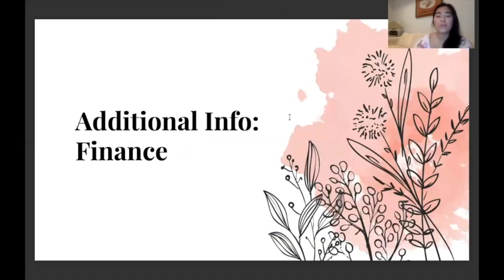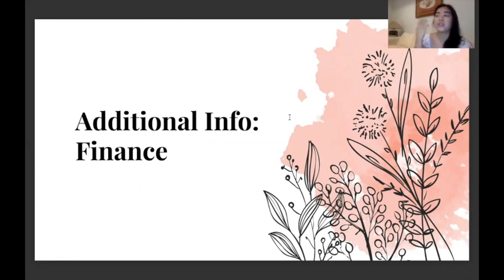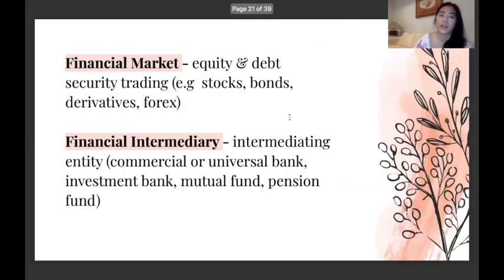Additional info on finance, because it's inevitably intertwined with economics. Some motions might go for you to set up a certain policy — you can base it on the CPI, like for a UBI granted based on the standard of living or consumer price index. A financial market is just equity and debt security trading — stocks, bonds, derivatives, forex are the markets upon which these instruments are traded. The intermediary is usually a bank, but there are different types: commercial, universal, investment, mutual fund, and pension fund.